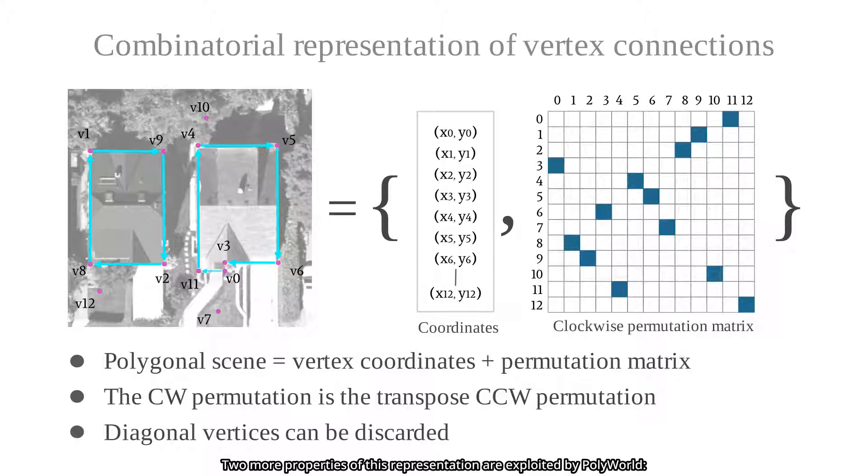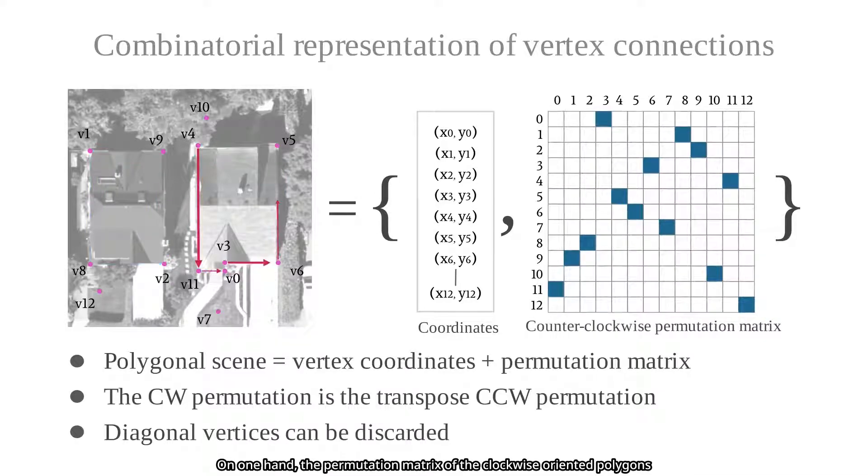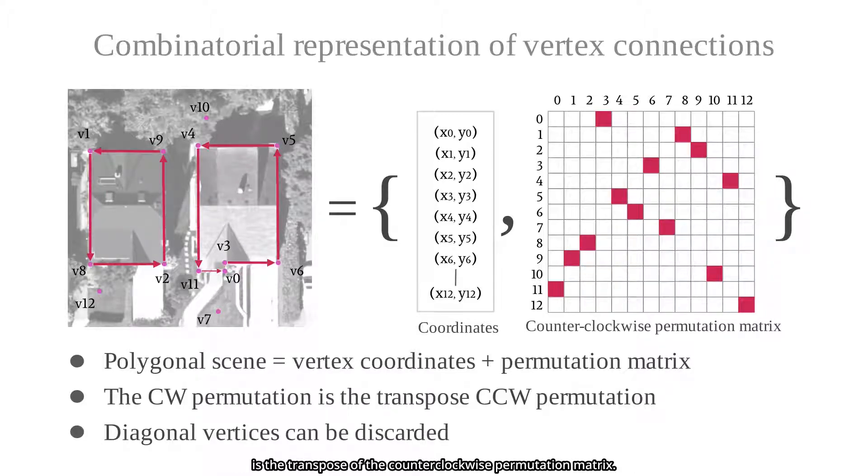Two more properties of this representation are exploited by PolyWorld. On one hand, the permutation matrix of clockwise-oriented polygons is the transpose of the counterclockwise permutation matrix.